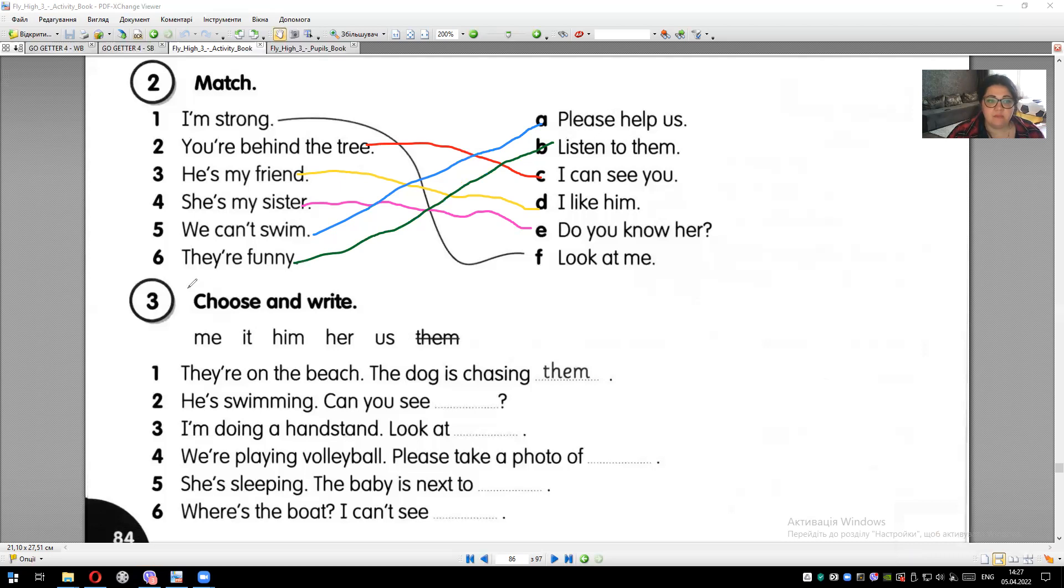Next exercise. We need exercise three. Choose and write. Choose the pronouns. Me, it, him, her, us, them.